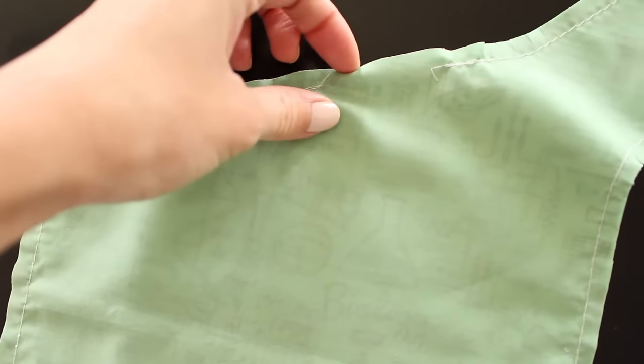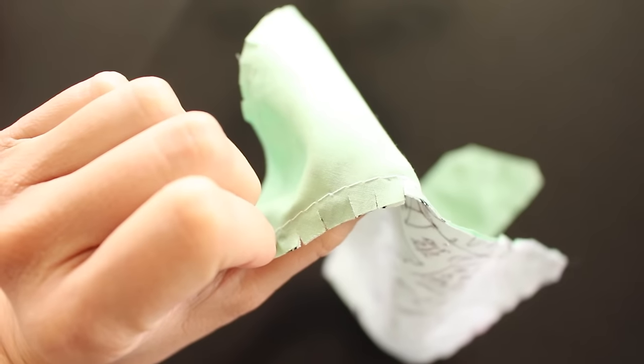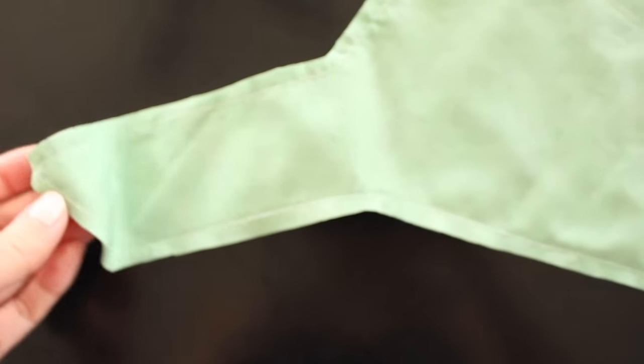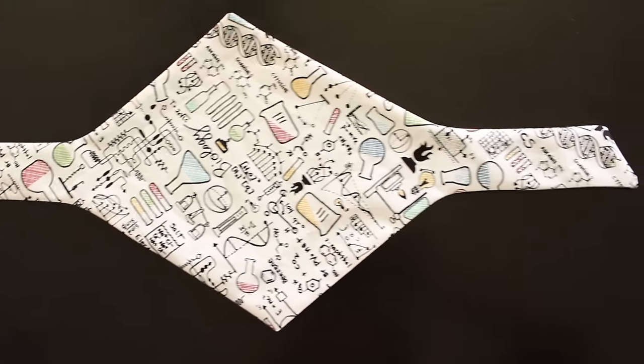Cut out the bandana leaving extra fabric around it. Then sew the sides together leaving an opening. Cut around the curves and corners to prevent bunching. Turn it inside out and iron it.